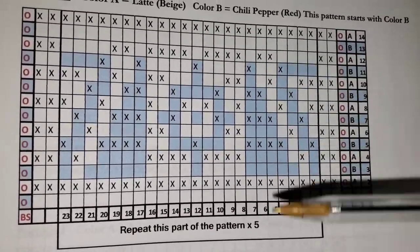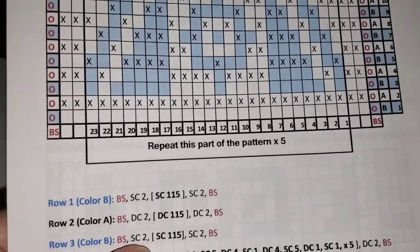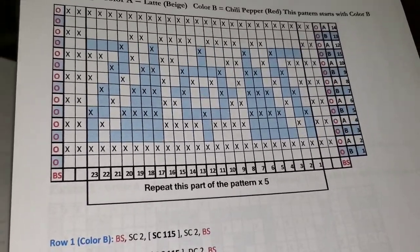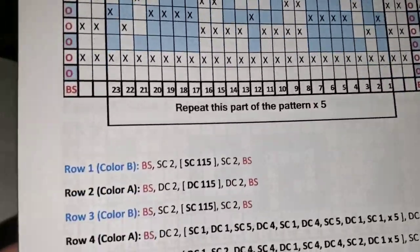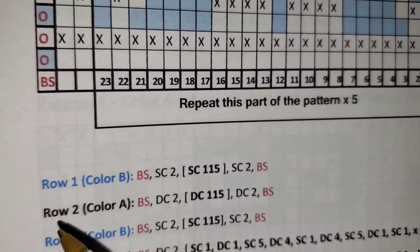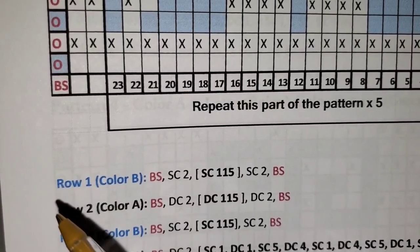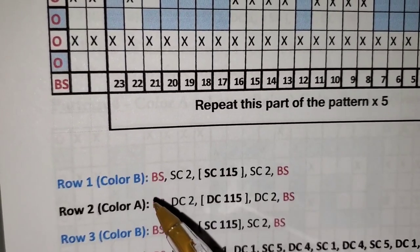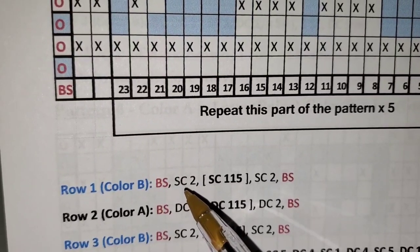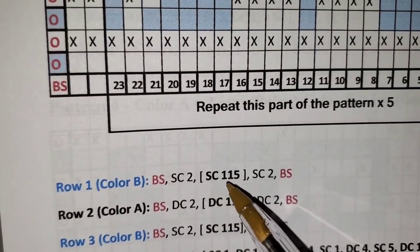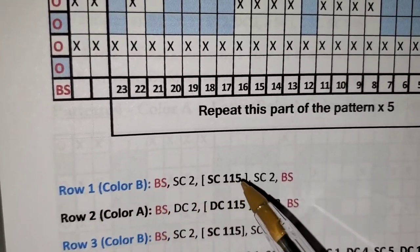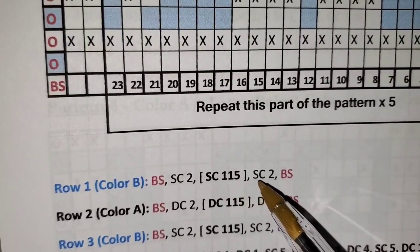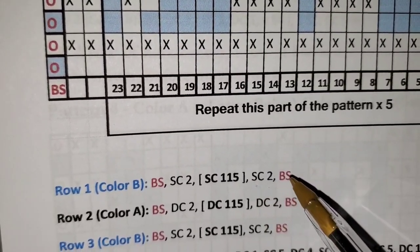Some people like to work off of the grid, and I have to have the grid in order to make the design. So I figured why not give you both the grid and the written. I really like to work off the written, which is what you see in the previous video. So you see row one, color B, which is your pattern color, crochet a border stitch, single crochet two stitches. And in the parentheses is always where you have your repeats. In row one, there's no repeat. You're single crocheting 115 stitches. Then you're ending with a single crochet two and a border stitch.